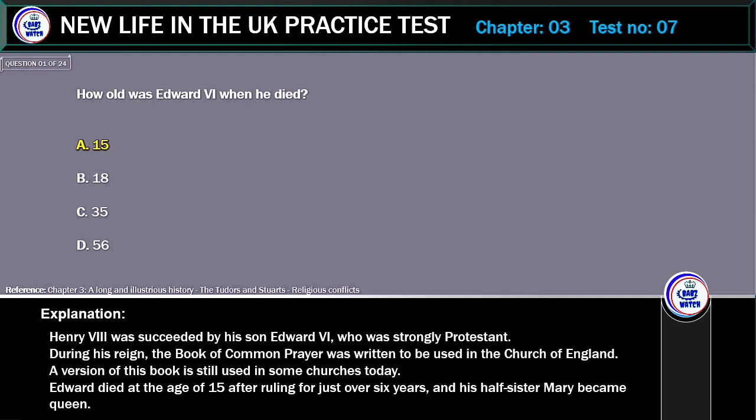Explanation: Henry VIII was succeeded by his son Edward VI, who was strongly Protestant. During his reign, the Book of Common Prayer was written to be used in the Church of England. A version of this book is still used in some churches today. Edward died at the age of 15 after ruling for just over six years, and his half-sister Mary became Queen.